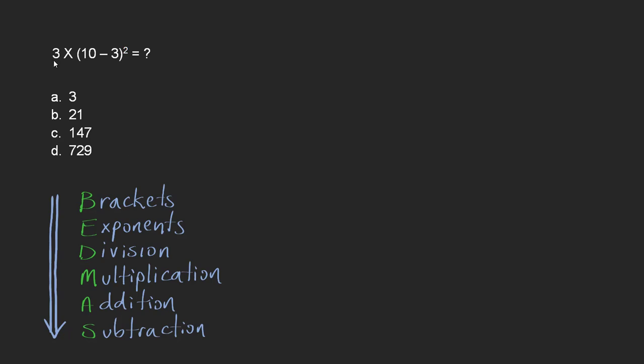Now we're solving 3 multiplied by the brackets of 10 minus 3 squared. So we have multiplication, brackets, subtraction, and exponents. So fairly complicated, but let's go through it step by step.